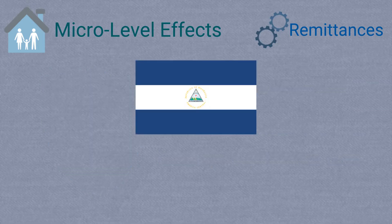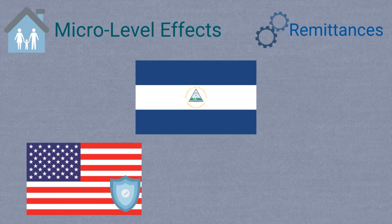For example, a study in Nicaragua showed that the positive effect of migration on the well-being of the household who stayed behind was more pronounced when the migrant was able to move to the United States compared to moving to Costa Rica.